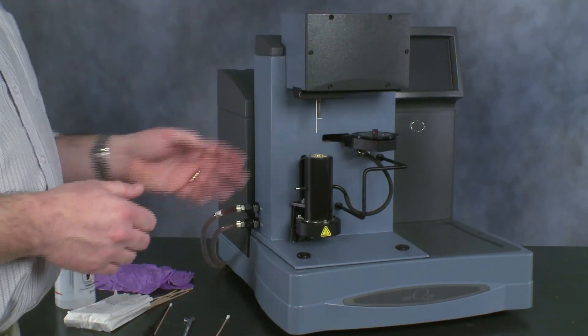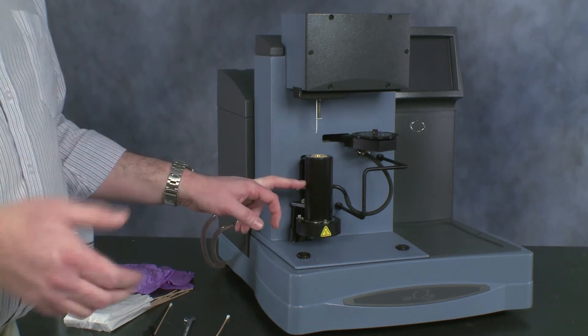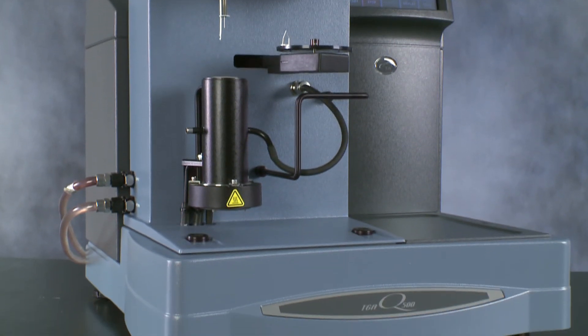We can then power the furnace back on and we're ready to go again. Before we start any testing, we want to take the furnace up to an elevated temperature and hold for a while just to drive off any residual solvent. Once we've done that, we're ready to run samples again.